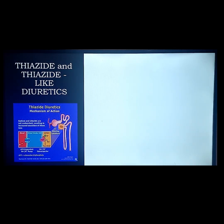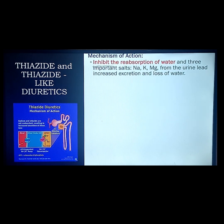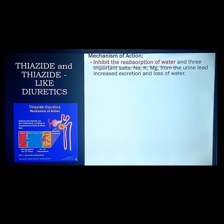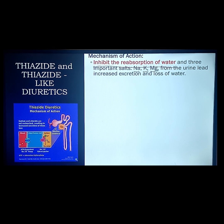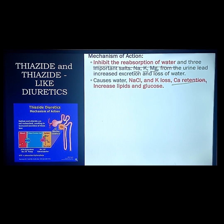We are down to our last two drugs — thiazide and thiazide-like diuretics. For thiazide, the mechanism of action is it inhibits reabsorption of water, meaning it promotes excretion. It promotes excretion of three major salts: sodium, potassium, and magnesium. Unlike loop diuretics which excrete all including calcium, thiazide retains calcium. It also retains lipids and glucose. So while sodium, chloride, potassium, magnesium, and water are being excreted, calcium, lipids, and glucose are retained.